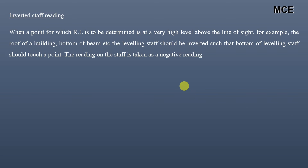Whenever you have to find the reduced level of a point that is above the line of sight — for example, the roof of a building or the bottom of a beam — you hold the leveling staff inverted such that the bottom of the leveling staff touches the point for which you have to find the reduced level. The reading obtained from the staff is called the inverted staff reading and it is taken as negative.